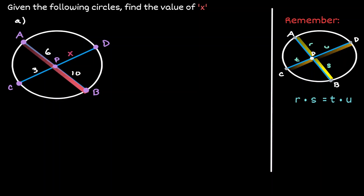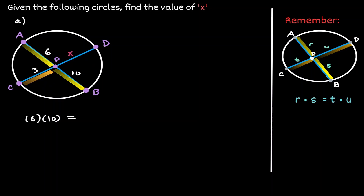In example A, chord AB has a segment of length 6 and a segment of length 10. So we know that if we multiply those two segments, that is going to be equal to the multiplication of the segments of the other chord — the segment of 3 and the segment with the variable x. Multiplying the left-hand side gives us 60, and the right-hand side gives us the expression 3x.